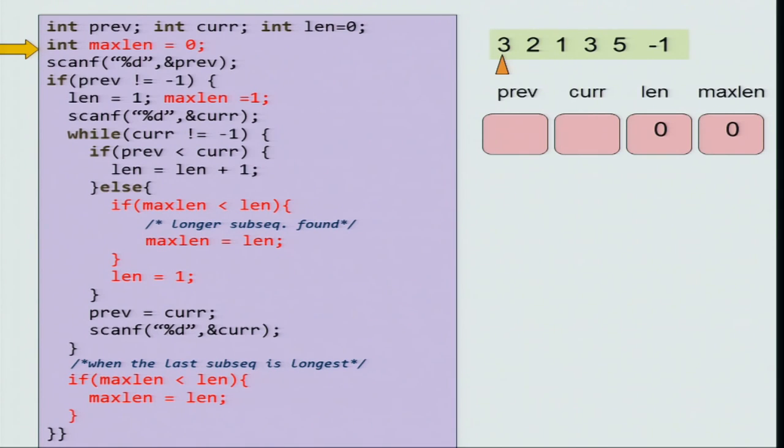So, initially you have a bunch of variables which you declare. So, length is 0, max length is 0 and previous and current are undefined then you first read previous. So, previous becomes 3 it is not minus 1. So, you enter the if condition at which point you set length and max length to 1. Now, you scan the current number. So, current becomes 2.